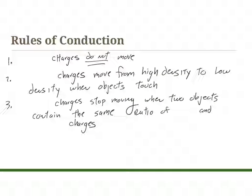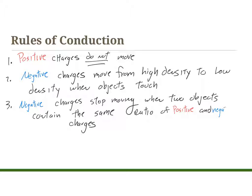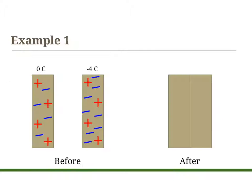There are a couple of rules for conduction, and I highly suggest you copy these down. Rule one: positive charges do not move. Rule two: negative charges move from high-density charge to low-density charge when objects touch only. Rule three: negative charges stop moving when two objects contain the same ratio of positive and negative charges. You might want to pause the video and copy this down, then start the video again and go on to the next slide where I'll go through a couple of examples.